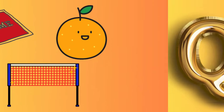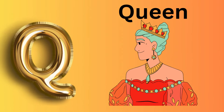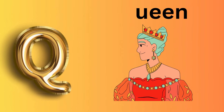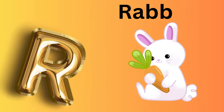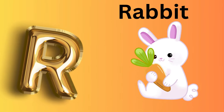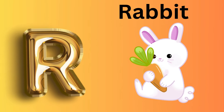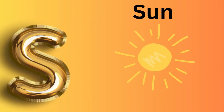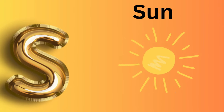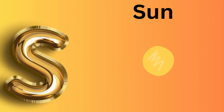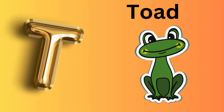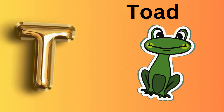Q is for Queen. K, K, Queen. R is for Rabbit. R, R, Rabbit. S is for Sun. S, S, Sun. T is for Toad. T, T, Toad.